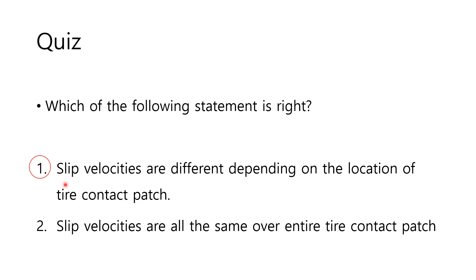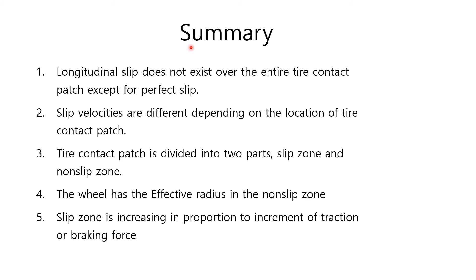The answer to the quiz is number 1: slip velocities are different depending on the location of the tire contact patch. Here is a summary: Longitudinal slip does not exist over the entire tire contact patch except for perfect slip. Slip velocities are different depending on the location of the tire contact patch. The tire contact patch is divided into two parts: slip zone and non-slip zone. The wheel has the effective radius in the non-slip zone. The slip zone is increasing in proportion to the increment of traction or braking force.